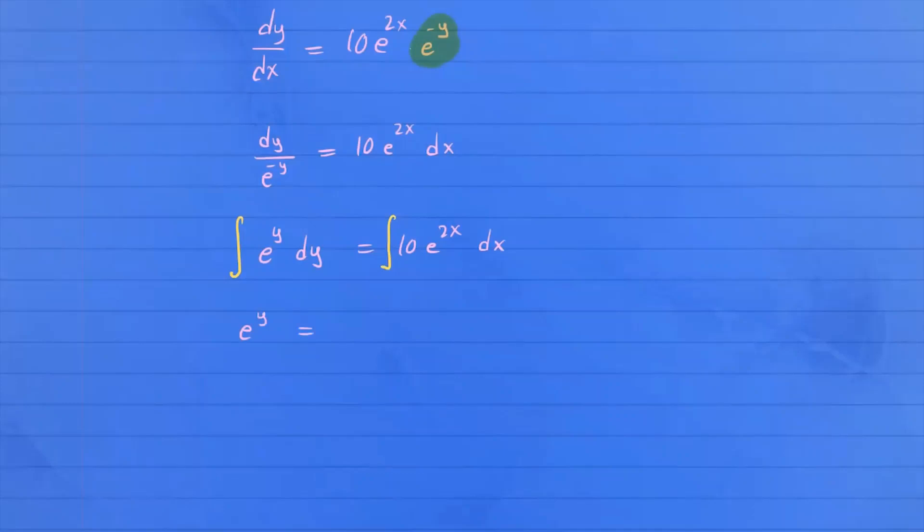On the right-hand side, when you integrate this, you're using this rule of integration. If you have e^(ax) where a is a real number, this integral is e^(ax)/a plus c. That's what we're going to do here. Our a is 2, so you have 10 times e^(2x) divided by 2. Now we can put the integration constant plus c.